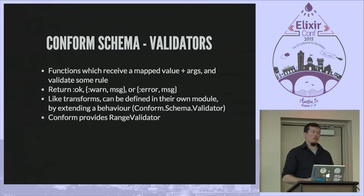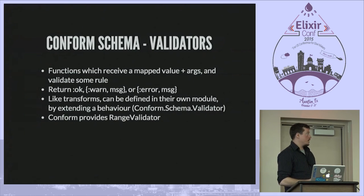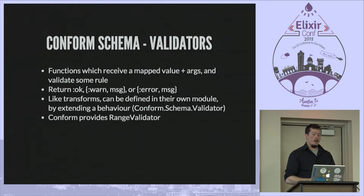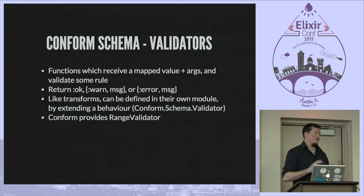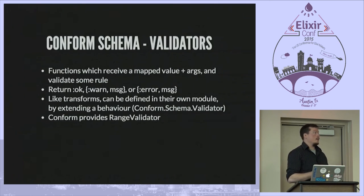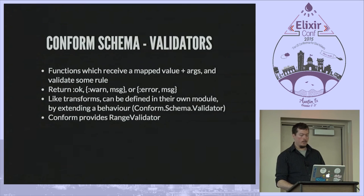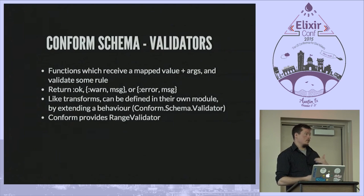Validators are much the same way — they receive the value that needs to be validated and optional arguments. Conform provides a range validator as an example that takes the range to be validated against as an argument. Args to a validator are passed as a list as a second parameter. Validators need to return one of three things: there are cases where you might want to warn that a setting is valid but perhaps extreme — warnings are treated as okay but a message will be printed. You return okay or an error if need be; if an error occurs during validation, the configuration evaluation will stop and the user will have to fix it.